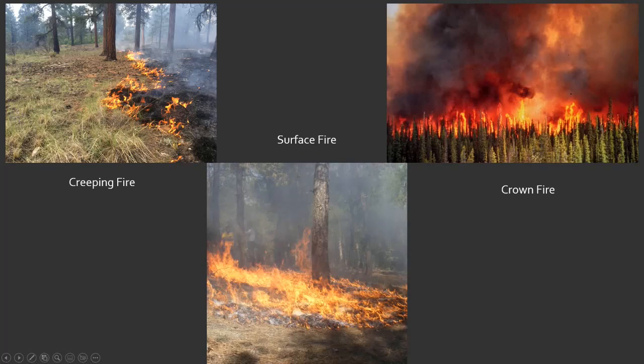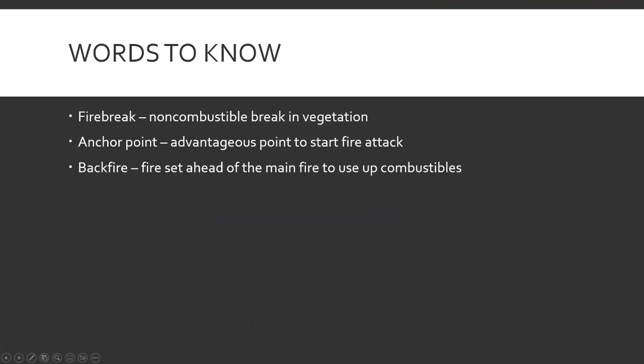And then crown fires — this is where the fire is actually up in the trees, blowing overhead. This is the kind of stuff you can't put out. When you get a crown fire really going, it's just kind of pick a spot, make a stand hopefully, create fire breaks. But when it's blowing through the tops of trees, it's not a winnable fight.